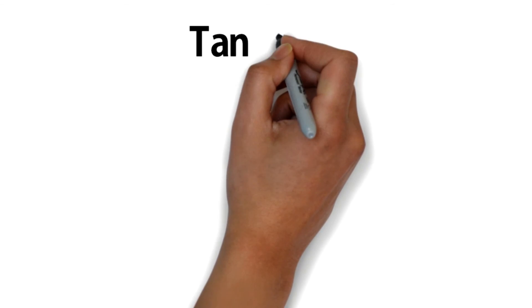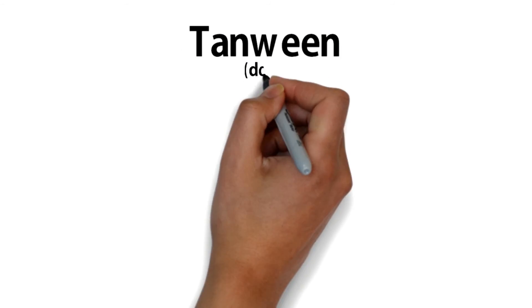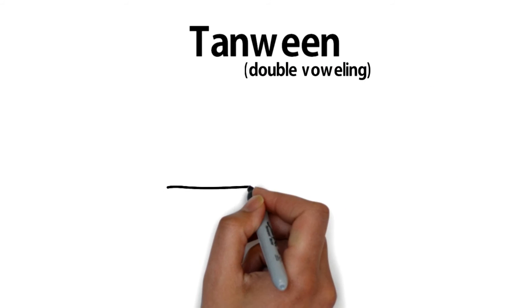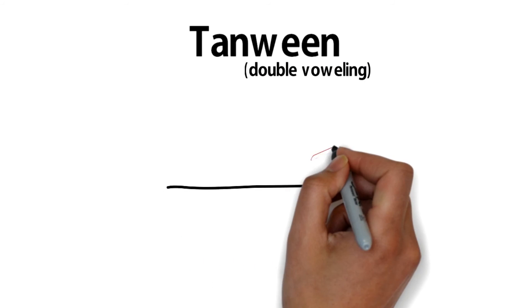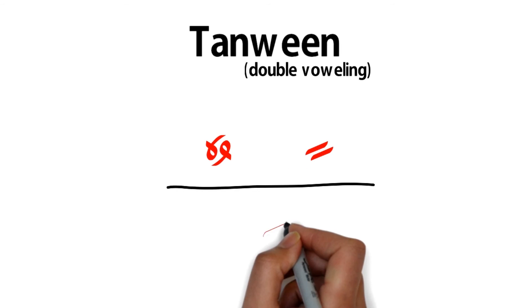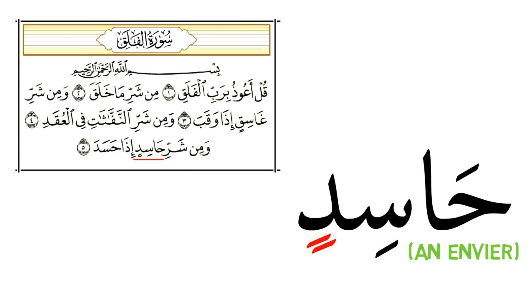Let's summarize. Remember that the tanween means double-voweling and it makes a noun indefinite. Tanween can be a double fatah, double dhamma, or double kasrah. In the above example, hasidin, it is a double kasrah. Inshallah you will learn why it is a kasrah and not a dhamma or a fatah in later lessons.